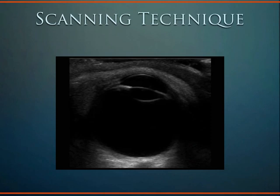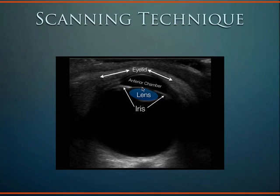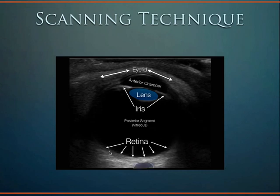When scanning the eye, use copious amounts of gel with the patient's eyelid closed, so the probe sits above the gel without directly contacting the eyelid. You can visualize the anterior chamber, lens, iris, and pupil — the pupil appears dilated because the eyelid is closed, but shining light in the opposite open eye would cause this pupil to constrict. The posterior segment is filled with vitreous humor; the retina lies along the choroid at the back of the eye, with the optic nerve sheath extending posteriorly.